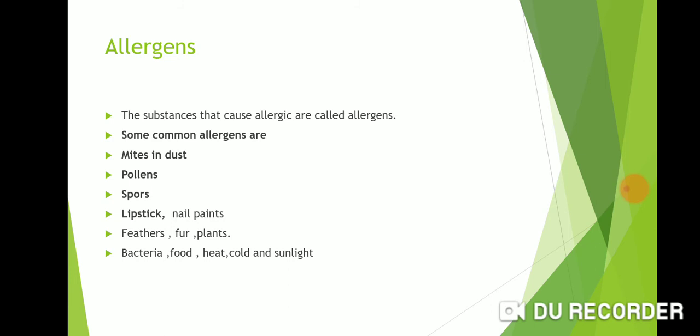Next allergen is lipsticks and nail paints. When you continuously use lipsticks on the lips, white patches can form. You can see effects on eyelids and skin from hair and cosmetic products. Also, different types of bacteria present in the environment can cause allergy.